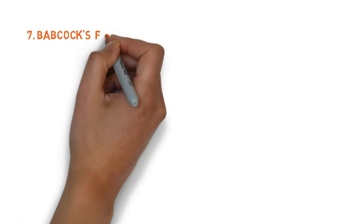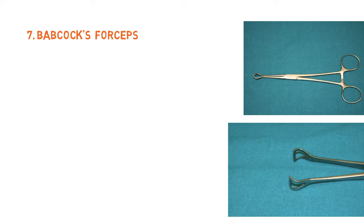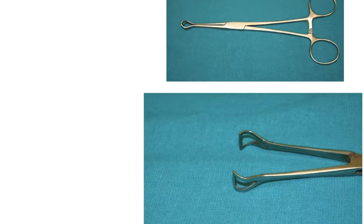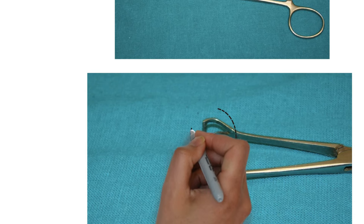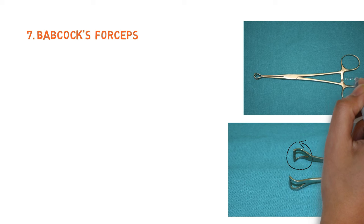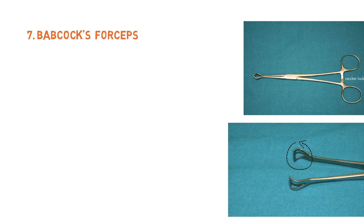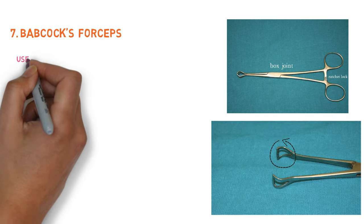Our next instrument is Babcock's forceps. It has semicircular fenestrated atraumatic ends which, when approximated, can hold a tubular structure. There is also a ratchet lock and a box joint.